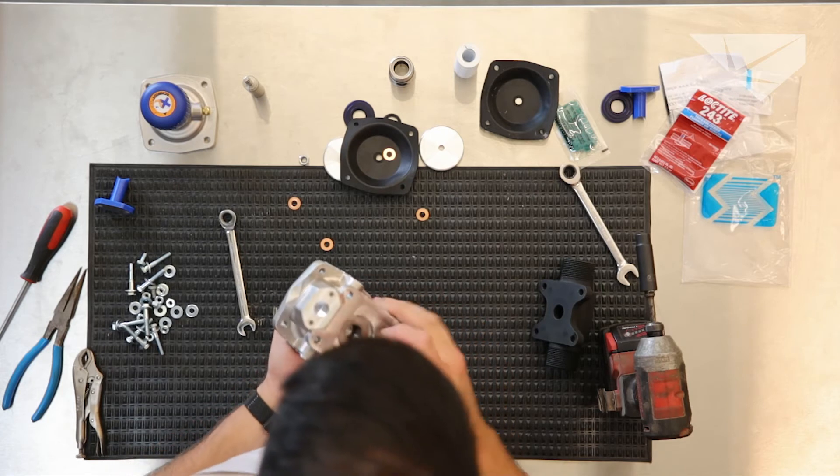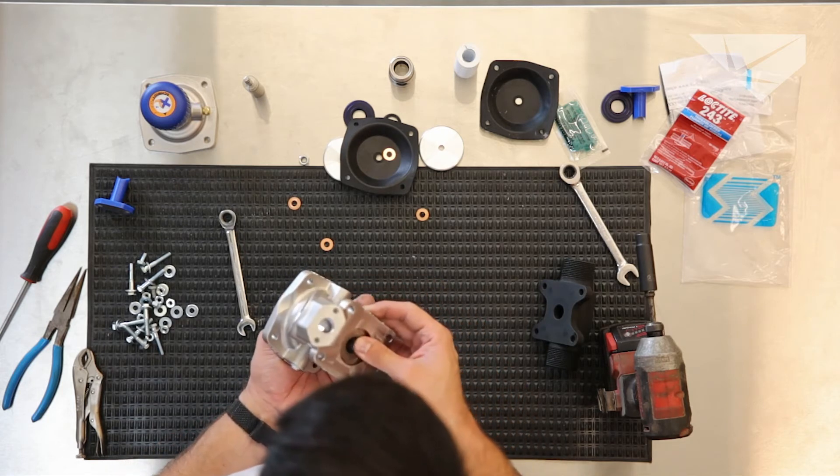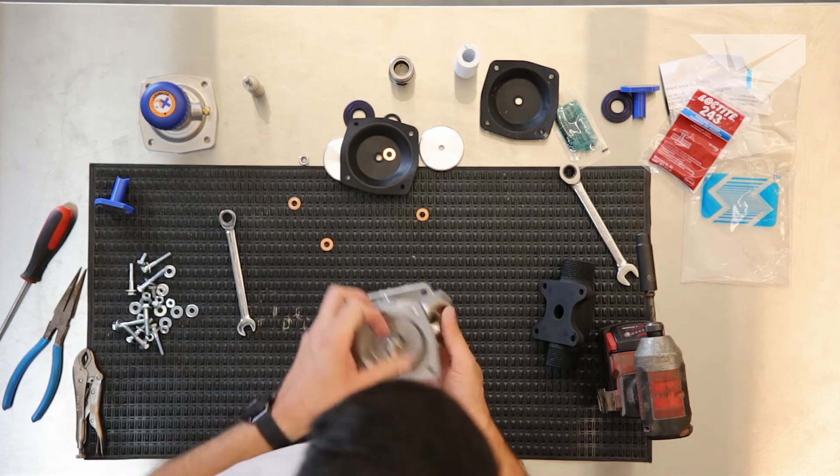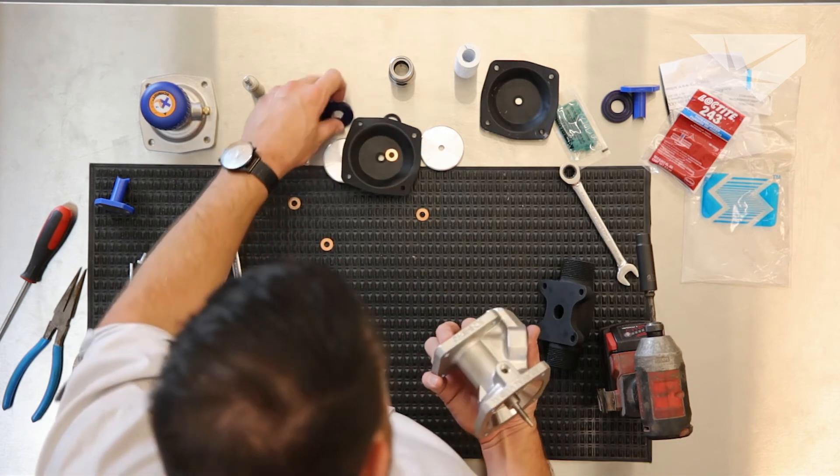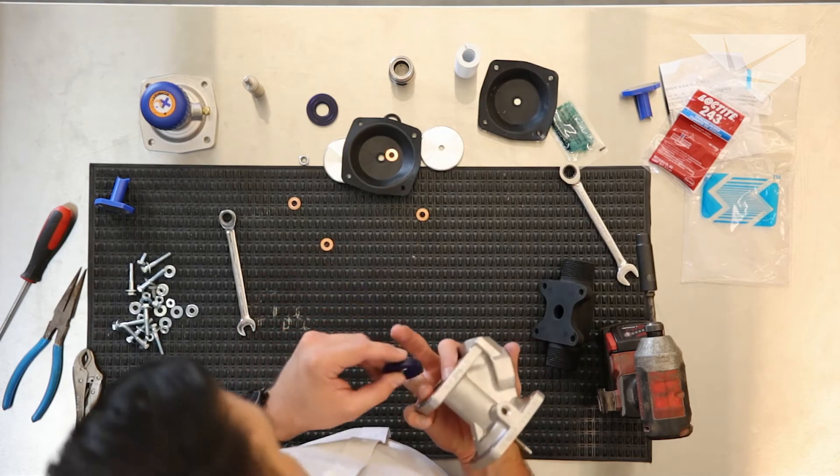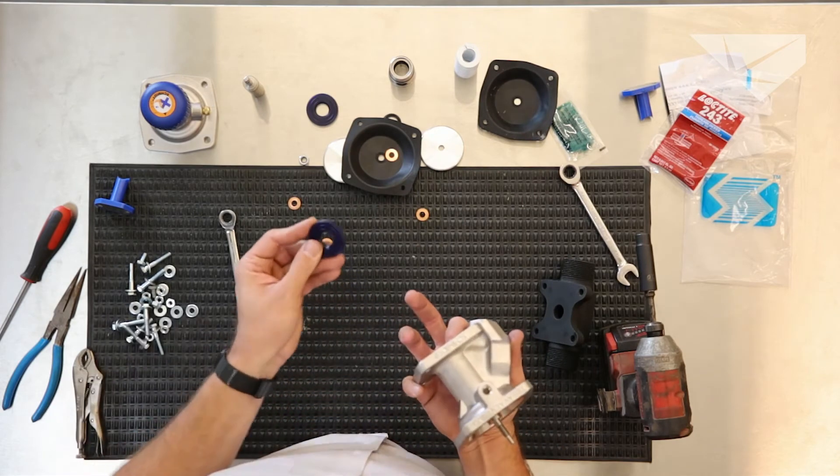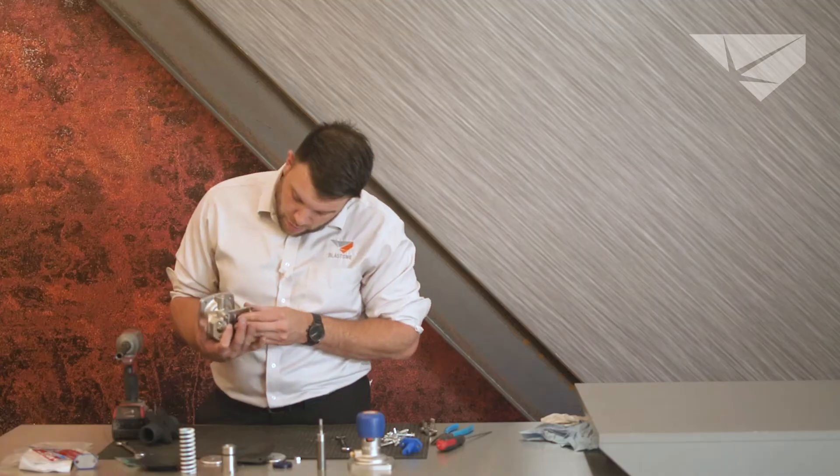And you will notice on this valve as well, it's got a flat side. Just make sure the flat side's aligned. From there, we're going to put the new seat. Beveled side goes towards the piston. Flat side goes towards the base.